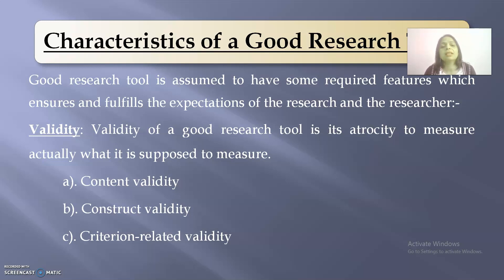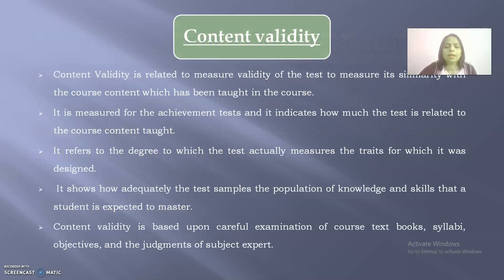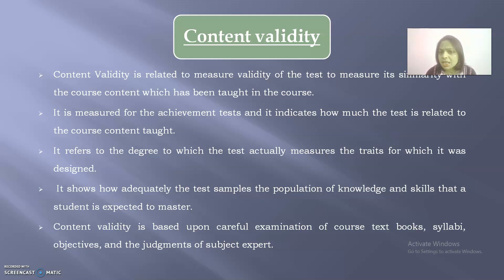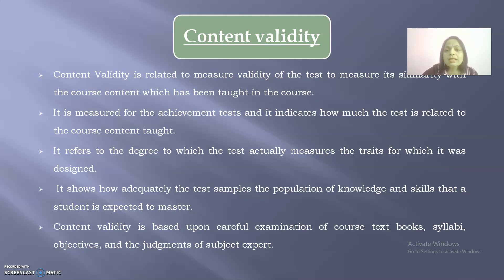There are certain types of validity: content validity, construct validity, and criterion-related validity. Content validity is related to the validity of the tool to measure its similarity with the course content taught. It is measured for proficiency tools and academic achievement tools, and indicates how much the tool is related to the course content. It is estimated by judging the relevance of tool items in relation to the objectives and actual subject matter, and depends upon careful examination of course books, syllabi, objectives, and the judgment of subject experts.